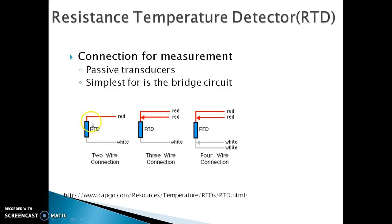One is the two-wire connection wherein there is no compensation. In three-wire connection, we have one wire which will go to ground or neutral and the two wires will be used for the measurement. For more accurate readings of the temperature, we would be using the four-wire connection.